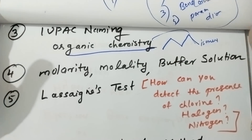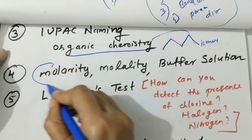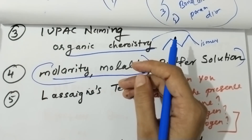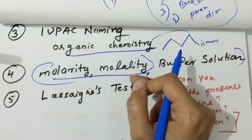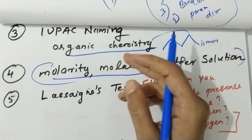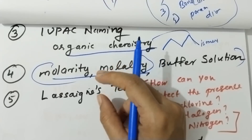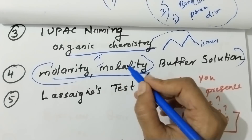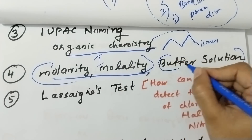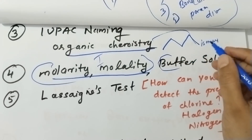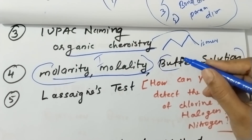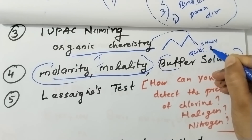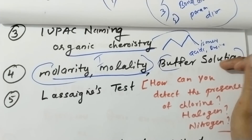Next is molarity-molality and buffer solution. This covers three main theories. Let's talk about molarity-molality with examples and problems. This is one chapter. It includes the buffer solution — both acidic buffer and basic buffer.